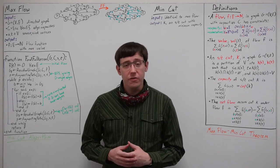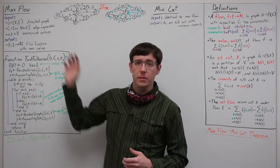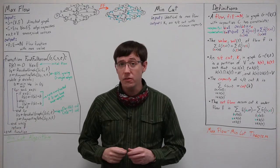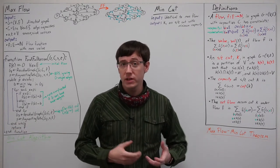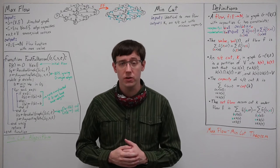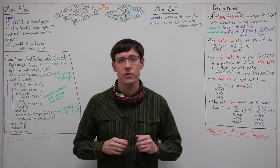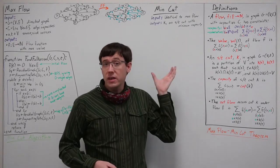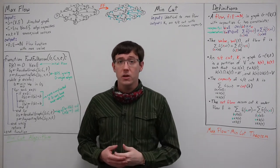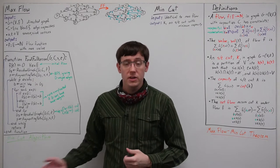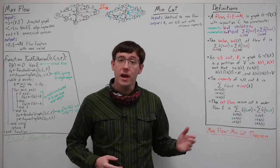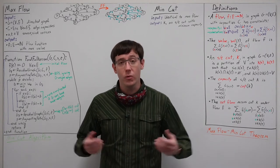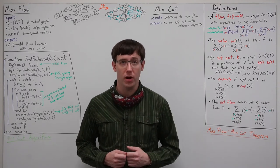In the last video, we defined the max flow problem and derived the Ford-Fulkerson algorithm to solve it. At the end of the video, I hinted that proving the correctness of Ford-Fulkerson depended on cuts in the graph. In this video, I want to define the min-cut problem, use Ford-Fulkerson to help us solve it, and then prove the max flow min-cut theorem, which will imply the correctness of our algorithms for both problems.